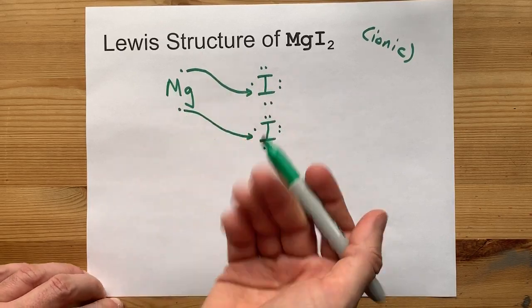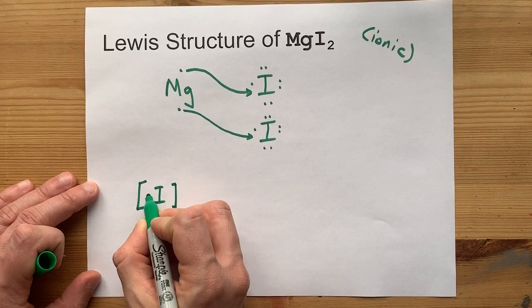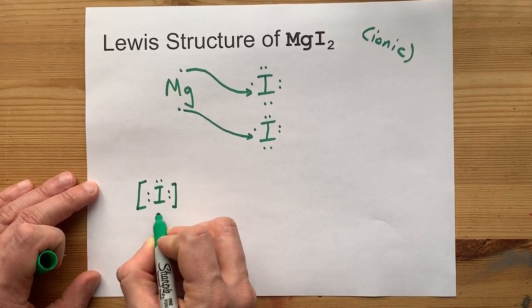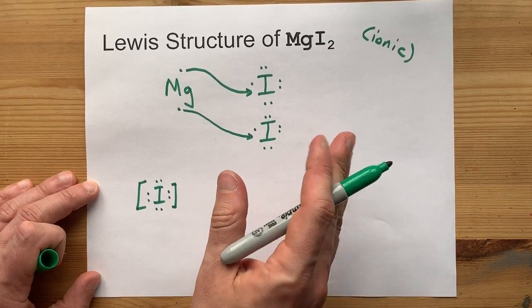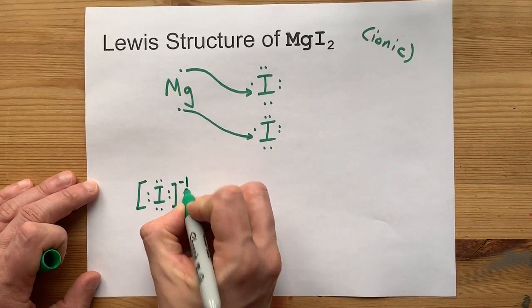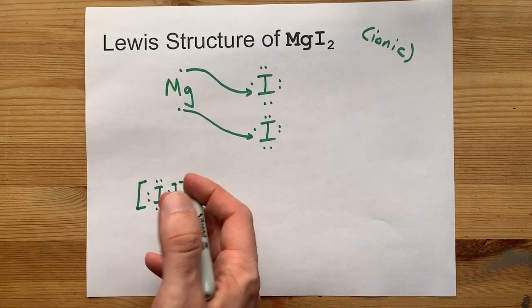This shows how the bonding works, but let's draw the actual Lewis structure. Iodine now has eight electrons. That's one more than it started with. Remember, it started with seven. That means it has a charge of minus one. These square brackets represent the fact that it's an ion.